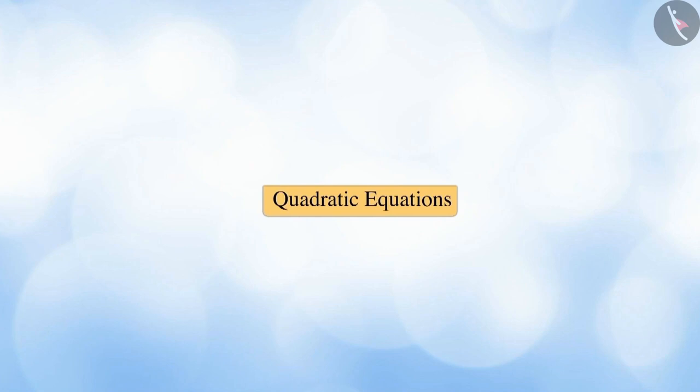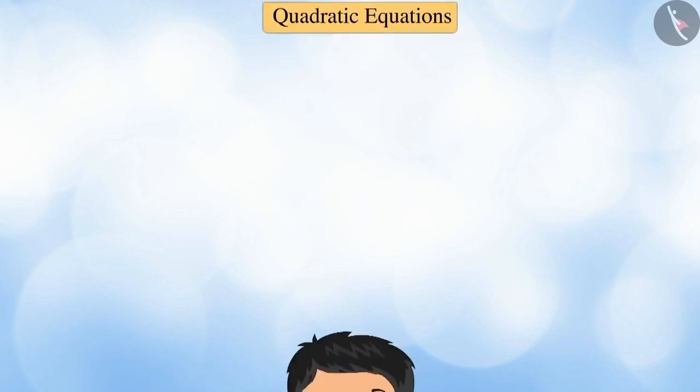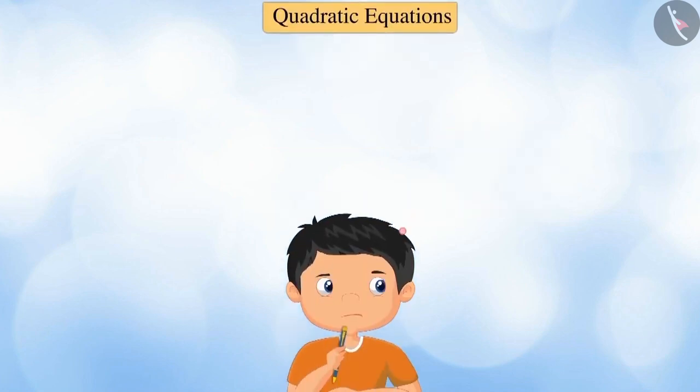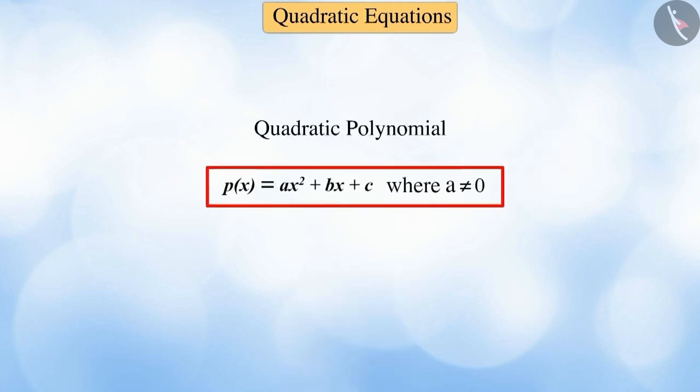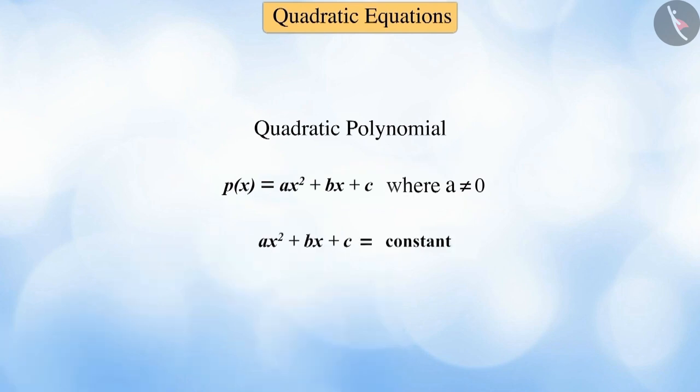Now let's understand quadratic equations. Can you tell how a quadratic equation looks? Consider the quadratic polynomial P(x) = Ax² + Bx + C. When this quadratic polynomial is equated to a constant, this polynomial gets converted into a quadratic equation.